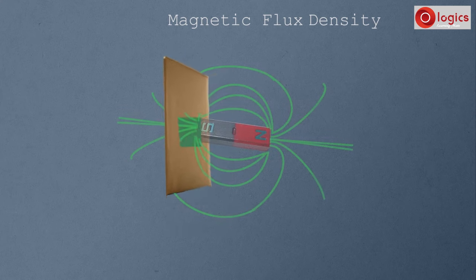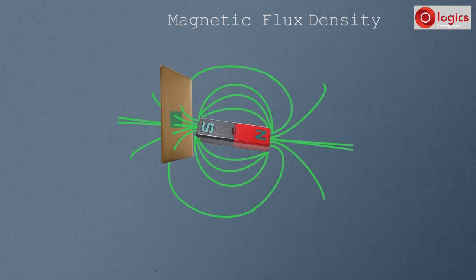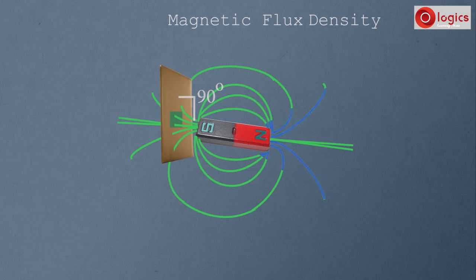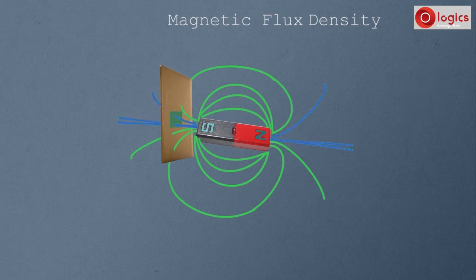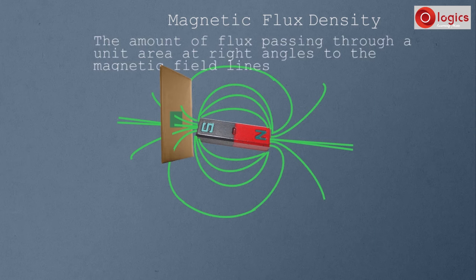Place this cardboard in the magnetic field such that the angle between the cardboard and the magnetic lines is 90 degrees. Observe — magnetic lines are passing through the cardboard surface; these are called magnetic flux. Some magnetic flux passes through this unit area. This magnetic flux passing through the unit area is magnetic flux density. Magnetic flux density is defined as the amount of flux passing through a unit area at right angles to the magnetic field lines.